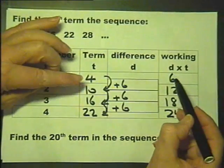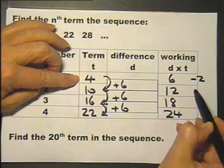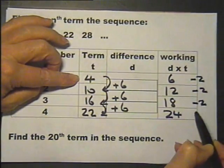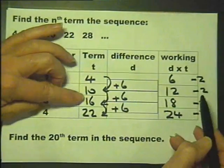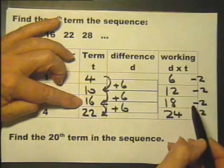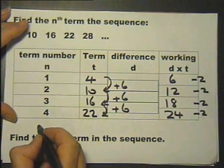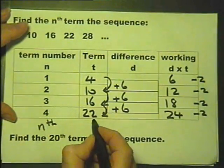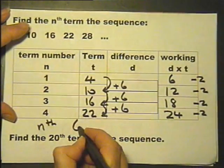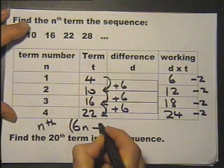Looking at these two columns, I can see that if I subtract 2 from these values, I'll actually get the terms. 6 take away 2 is 4, 12 take away 2 is 10, 18 take away 2 is 16. So this gives me my formula for the nth term. The nth term is 6n subtract 2.